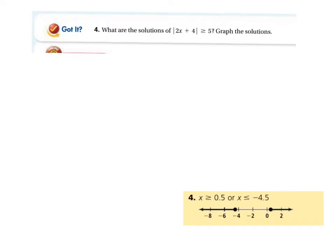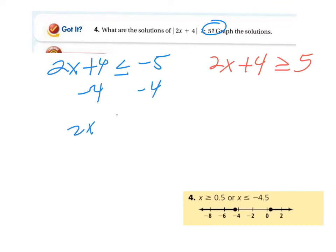Okay. So, again, it's going to be an or situation, so we're going to write two inequalities. We're going to say 2x plus 4 is less than or equal to the opposite of this, so it's going to be negative 5. And we're going to say 2x plus 4 is greater than or equal to 5. So, pay attention to the pattern we're using here. These are easy to solve once you get to this point. So, here, we're going to subtract the 4. Subtract the 4. 2x less than or equal to negative 9.